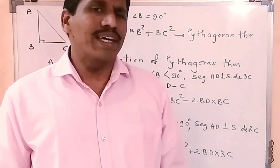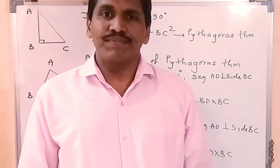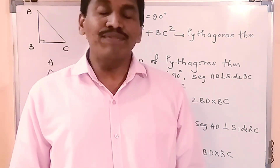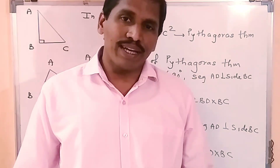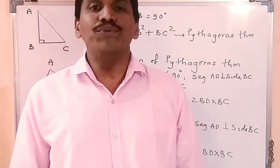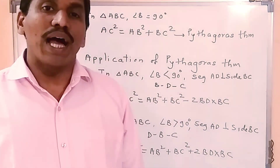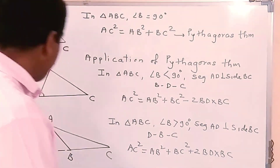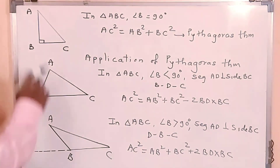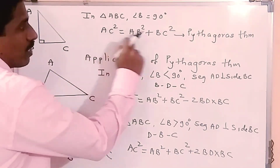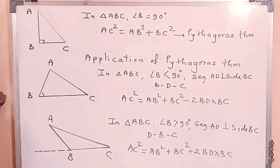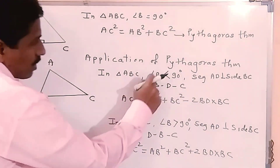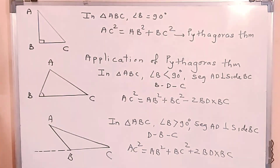If a triangle is a right angle triangle, we can apply Pythagoras theorem. If the triangle is not a right angle triangle, the angle will be either an acute angle or an obtuse angle, and we will use the application of Pythagoras theorem. If triangle is a right angle triangle, we use Pythagoras theorem: AC square equals AB square plus BC square. Suppose triangle ABC has angle B less than 90 degrees, meaning angle B is an acute angle.